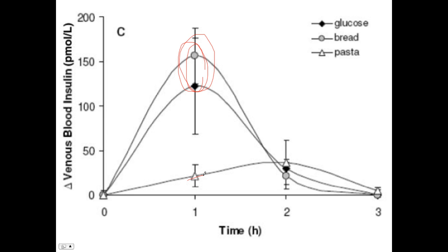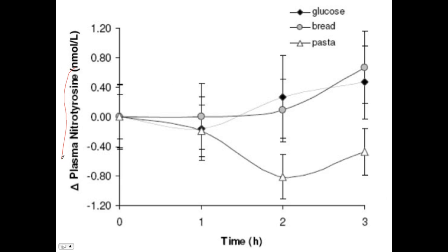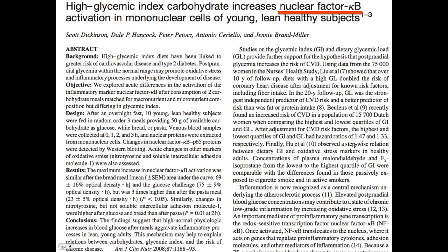This is a measurement of free radical production after consumption, starting at zero, one, two, and three hours. The greatest free radical production occurred at three hours, almost identical between glucose — i.e., soda — and bread, with minimal or none from pasta. They also measured the nuclear factor in white cells in addition to insulin, blood glucose, and free radicals. The nuclear factor is what turns on the inflammatory process.